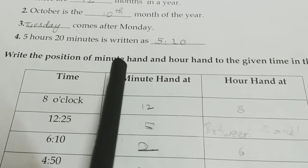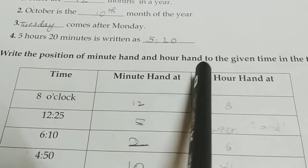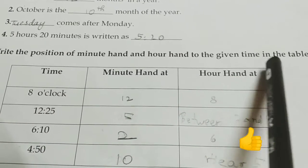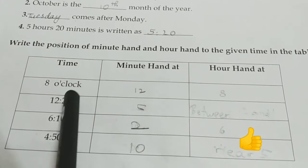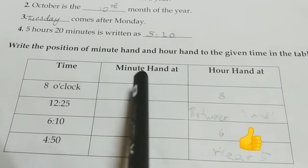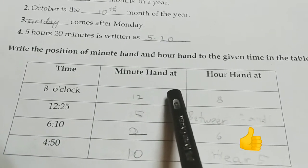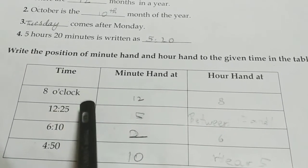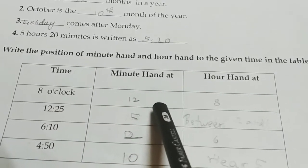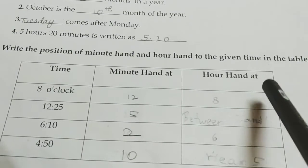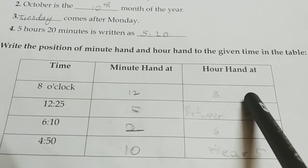Write the position of minute hand and hour hand to the given time in the table. Time is given here. If 8 o'clock, the time is there. Where should be the minute hand? Where should be the hour hand? 8 o'clock. So, the minute hand should be at 12. And the hour hand should be at 8.